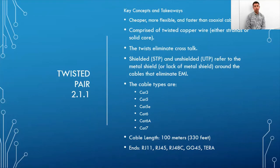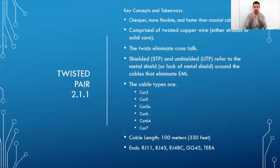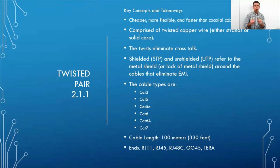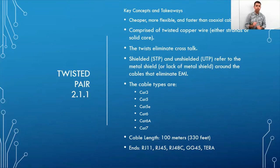The twists in twisted pair eliminate crosstalk. Computers receive electrical impulses as data, and if two wires run parallel, they both emit EMI and can begin to override each other's signals. Twisting the wires significantly reduces that interference.